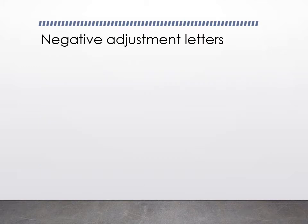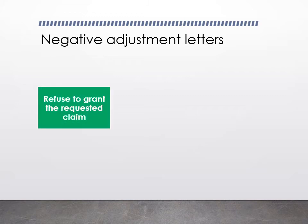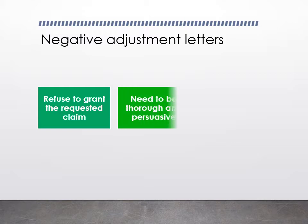We'll be writing a negative adjustment letter for project nine, in which you will be refusing to grant the requested claim. You won't do that right away — just as in the arguable claim letter you didn't ask for what you wanted right away, in a negative adjustment letter you'll work up to the refusal. You have to persuade them about the situation — you need to be thorough and persuasive and build a case.